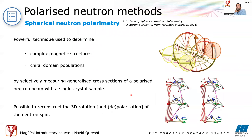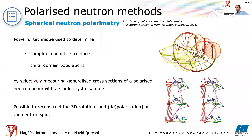Spherical neutron polarimetry is truly one of the most elegant techniques in neutron science. It's very powerful for determining complex magnetic structures, very sensitive to the direction of magnetic moments, and allows refinement of domain and chiral domain populations. This is achieved by selectively measuring generalized cross sections of a polarized neutron beam with a single crystal, giving the full vectorial information of the magnetic scattering process — including three-dimensional rotation of the neutron spin after interaction with the sample, plus polarization and depolarization.